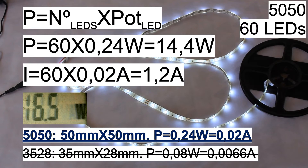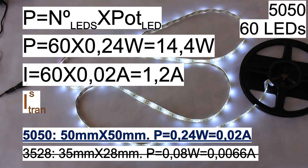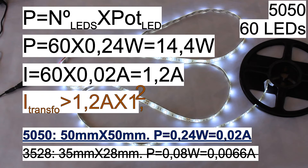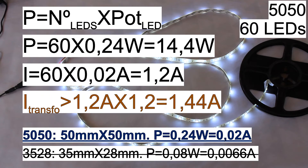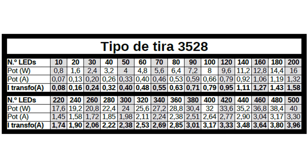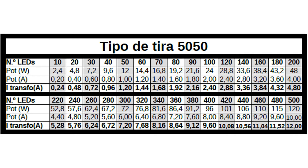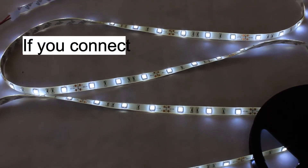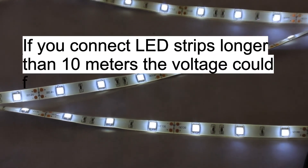Since we have a current of 1.2A in the calculation, if we multiply by 1.2 to add the 20% margin, we obtain 1.44A. We would choose a transformer of 2A or more. As you see, making the calculation is very simple. I leave here 2 charts with the approximate power for the 3528 LED strip depending on its number of LEDs, and the power estimation for the 5050 LED strip type. Remember not to connect more than 10 meters of LED strip continuously.